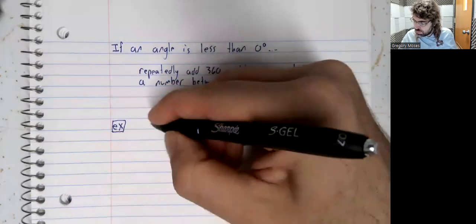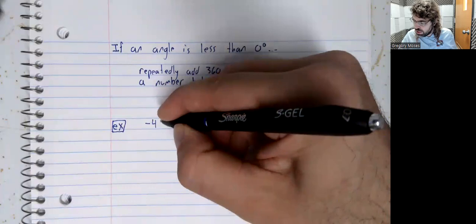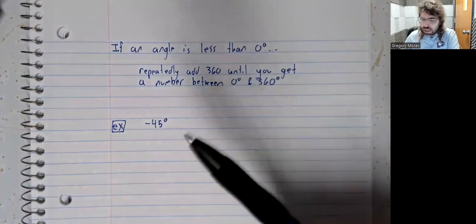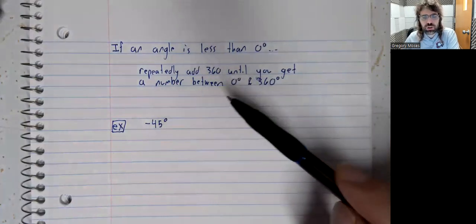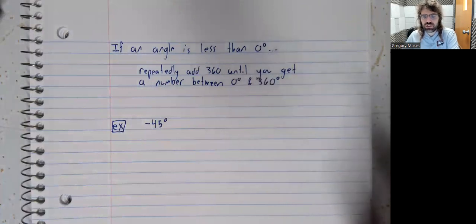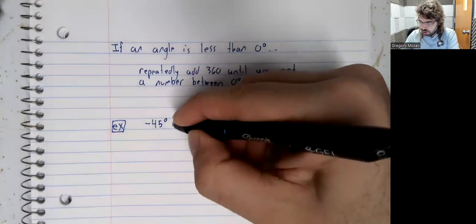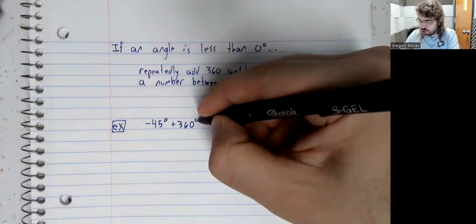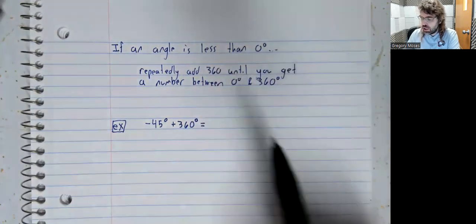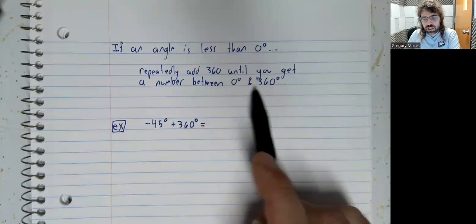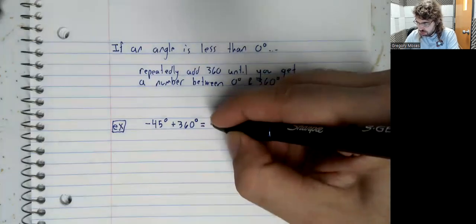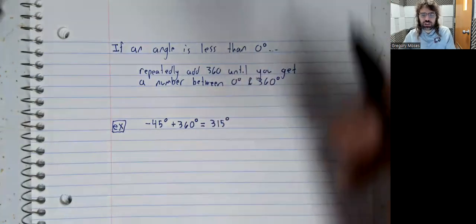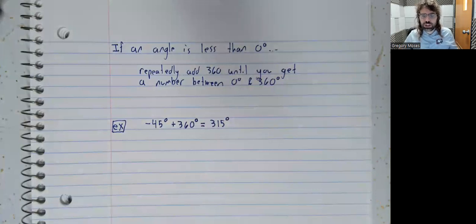Let's say you have negative 45 degrees. Adding 360 once gives us 315.